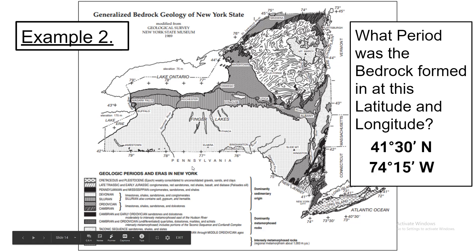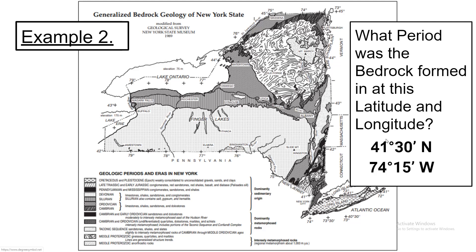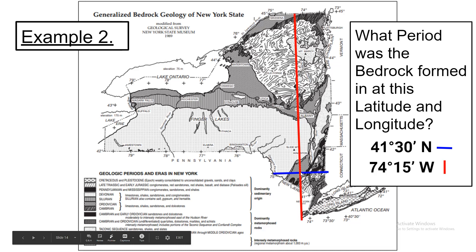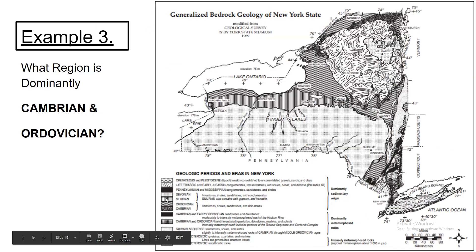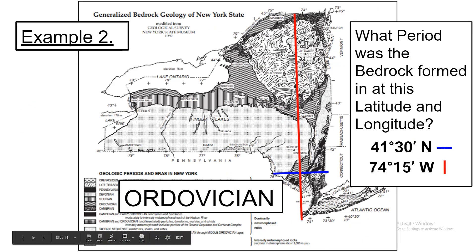Now let's do page three. What period was the bedrock formed in at this latitude and longitude? First step: find where exactly they're talking about. Latitude 41 degrees 30 minutes north — there's my latitude line. Then draw the longitude line: 74 degrees 15 minutes west, which would be here. Right where they meet is a slanted hash mark pattern, which is shown right here in the key. The period that the bedrock was formed at this latitude and longitude is the Ordovician period, because the hash mark is the symbol for that bedrock.